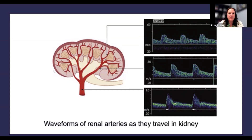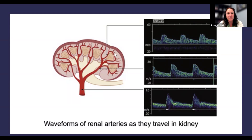As we move out into the parenchymal arteries, we should see similar characteristics, maybe a slightly lower, more rounded peak systolic. Still very low resistance, and that's important to note. If we develop chronic kidney disease, we start to see a lot of resistance to the blood flow, and these signals out here can become high resistance, and that's not a good sign.